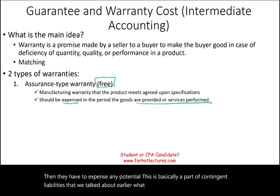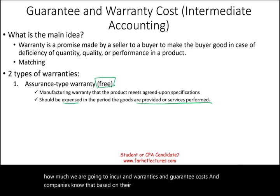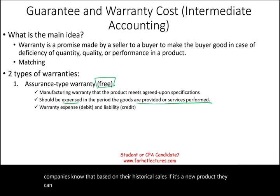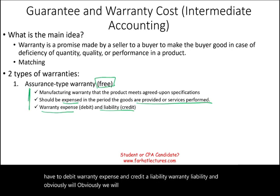What we have to do is estimate how much we are going to incur in warranty and guarantee cost. Companies know that based on their historical sales; if it's a new product, they can estimate. As soon as they make the sale, they have to debit warranty expense and credit a liability — warranty liability. We will work an example illustrating this assurance type warranty.